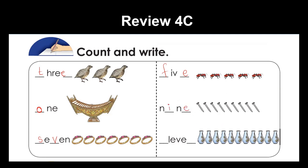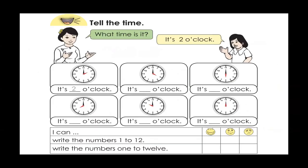How many vases are there? One, two, three, four, five, six, seven, eight, nine, ten, eleven — we have 11 vases. Perfect.